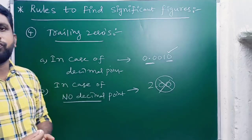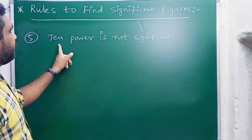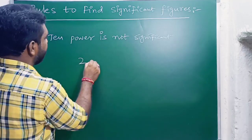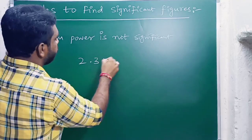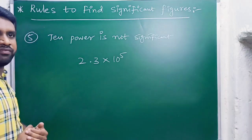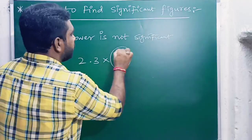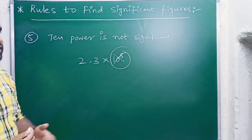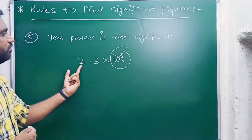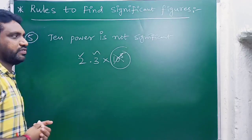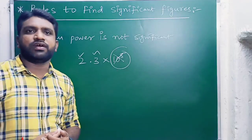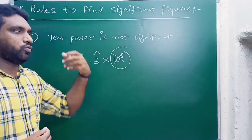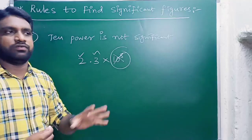Rule five: 10-power notation is not significant. For example, in 2.3 × 10⁵, the '10 to the power of 5' is not considered a significant digit. Only 2.3 — these two digits — are considered significant numbers. These are the five rules to find the number of significant figures in any given value.